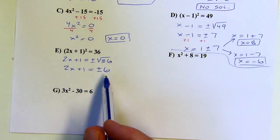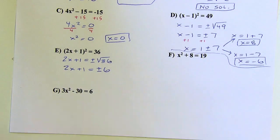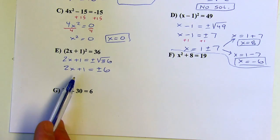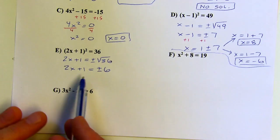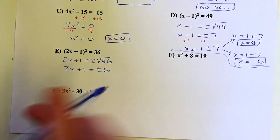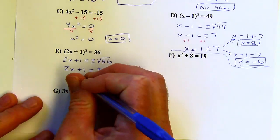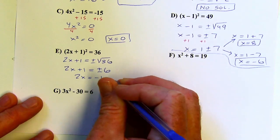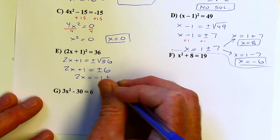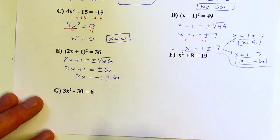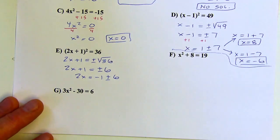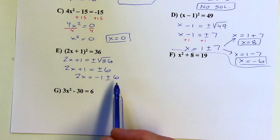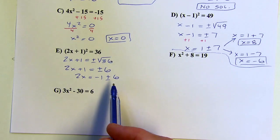Square root of 36 is 6. Now I want to start isolating x, so I'm going to subtract 1 from both sides, putting that 1 in front of the plus or minus symbol. You could divide by 2 right now if you wanted — actually, let's go ahead and do that, because we're trying to solve for x.